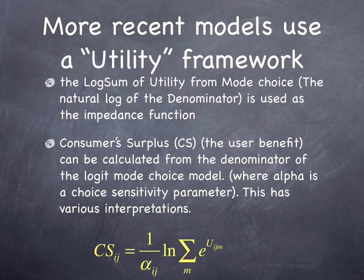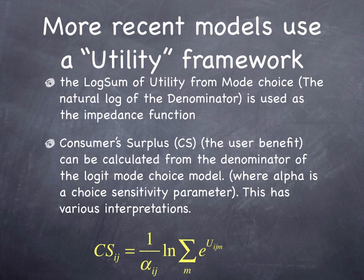More recently, it has been proposed that the log sum from the logit model would make a good multimodal impedance function for use in destination choice. This requires solving destination choice, mode choice, and route choice iteratively to converge on a consistent answer.